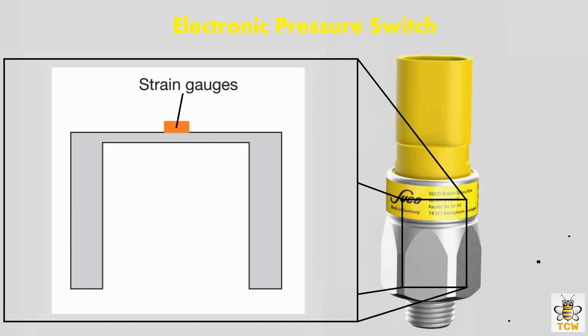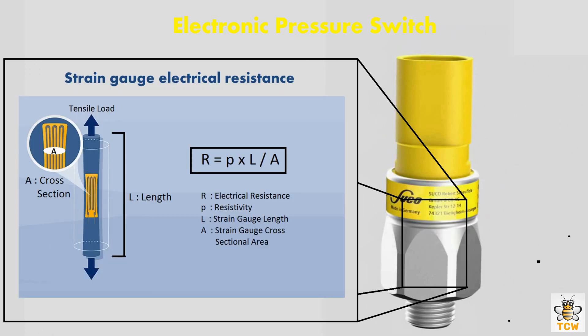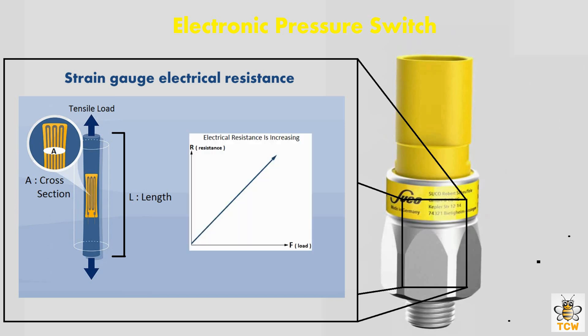A strain gauge is an electrically conducting material with special characteristics. When the strain gauge receives a tensile load, its shape becomes longer and its cross-sectional area decreases. According to the strain gauge resistance formula, if the strain gauge becomes longer and the cross-sectional area decreases, then the electrical resistance will increase.